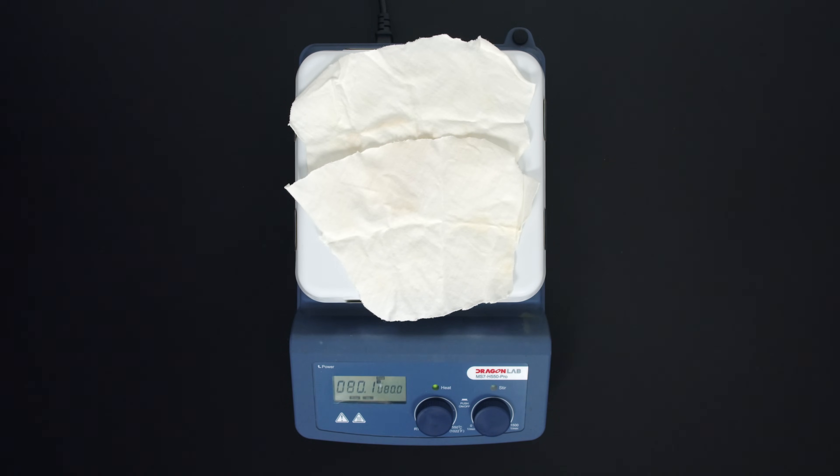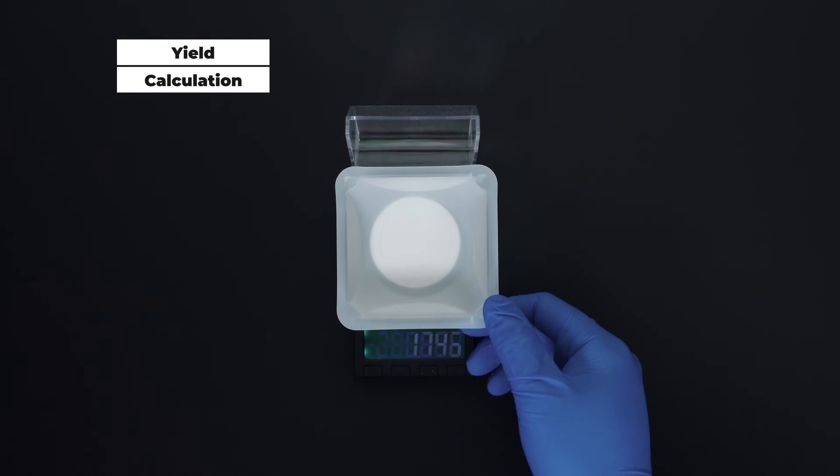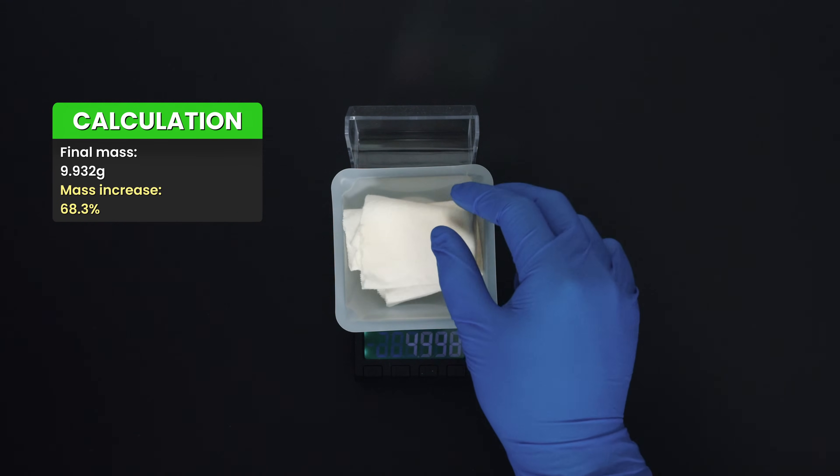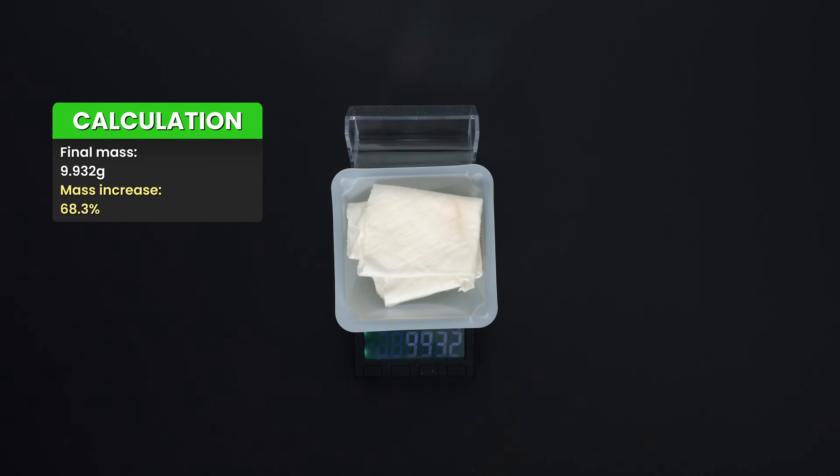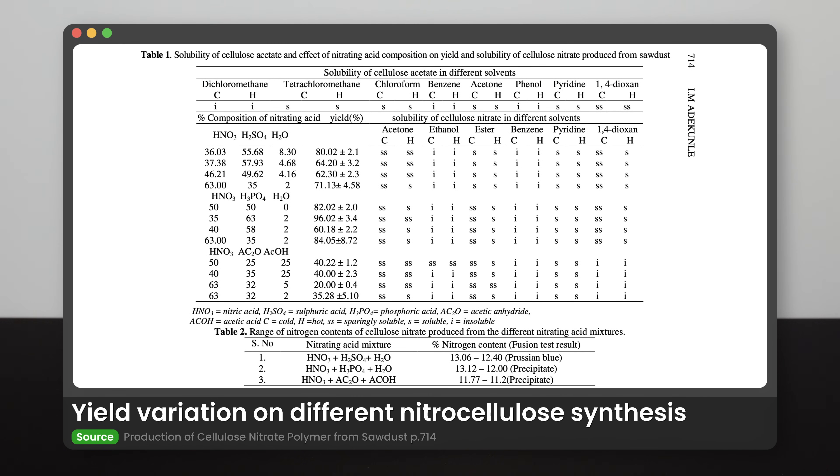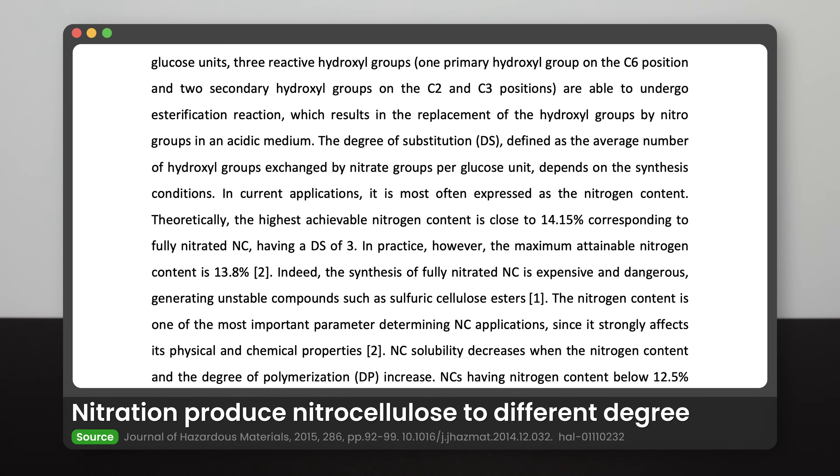Final product after drying will look and feel like normal fabrics with yellow tint on it. After drying, weigh the panties on the scale to obtain the final mass. We got 9.932 grams of nitrated panties, which is a 68% increase in mass. However, the yield percentage isn't straightforward in the case of nitrocellulose, and the nitration reaction doesn't usually go to completion. The determination of nitrogen content in nitrocellulose is a very complicated topic. I will leave this discussion for another video.